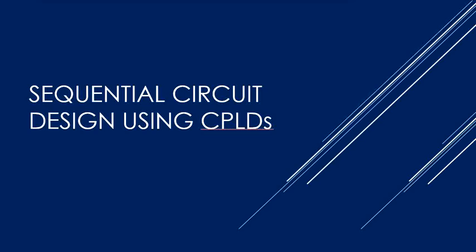Welcome to the tutorial on sequential circuit design using CPLD. A typical CPLD contains a number of macro cells that are grouped into functional blocks, and the connections between the function blocks are made through an interconnection array. Each macro cell contains a flip-flop and an OR gate which has its inputs connected to an AND gate array.